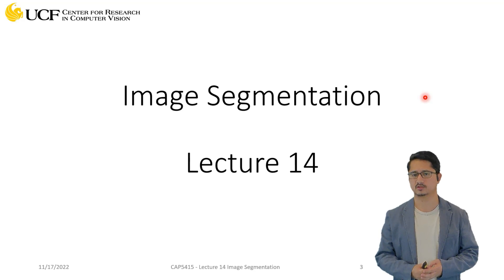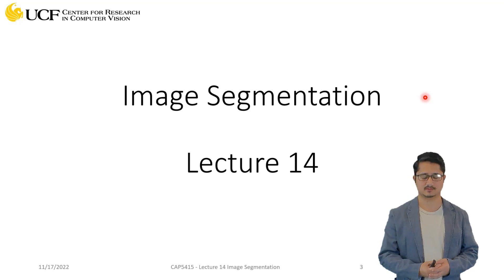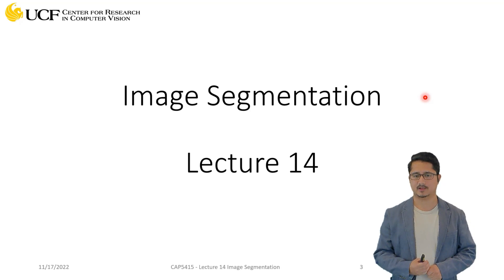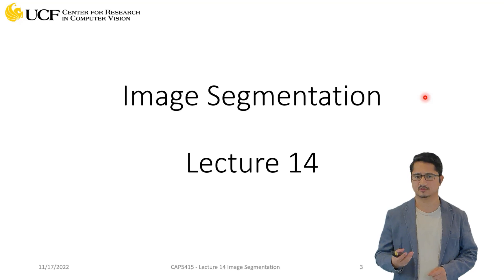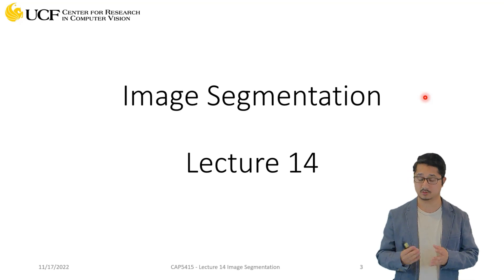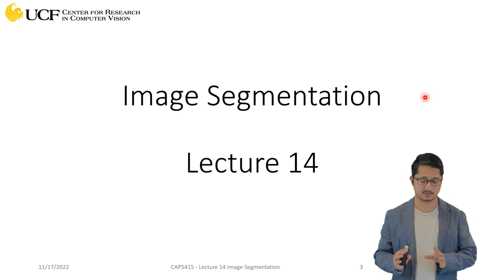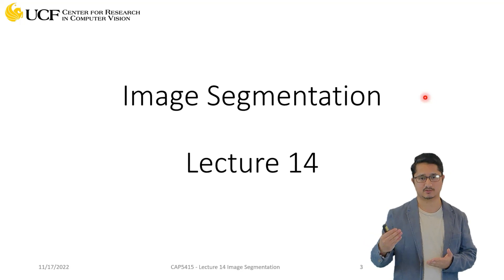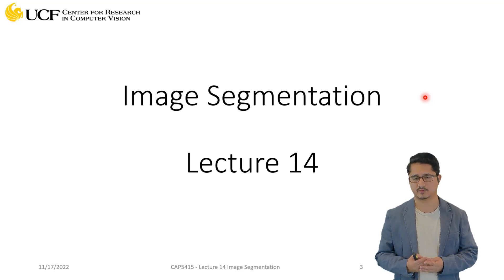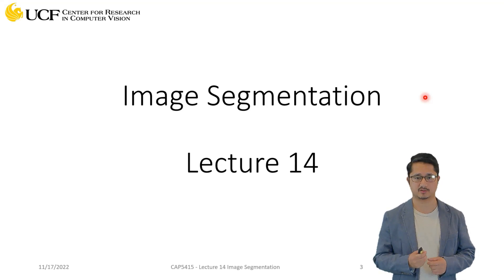Today's lecture is about image segmentation, which is a more complex problem than object detection studied in the last lecture. We will not only predict a rough estimation like a bounding box or localization of objects, but we'll try to find fine boundaries of the objects present in your image. That is called segmentation, and later in the next lecture we'll see how to extend that to semantic segmentation, which will also tell you the semantic meaning of each and every pixel.